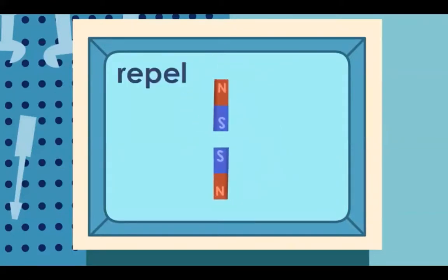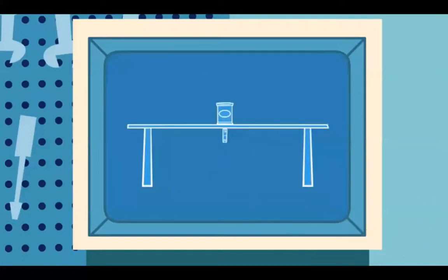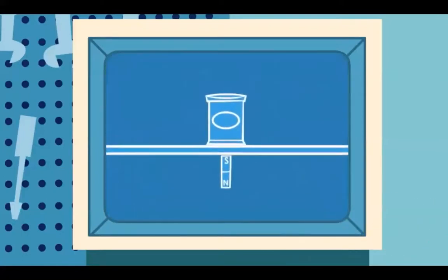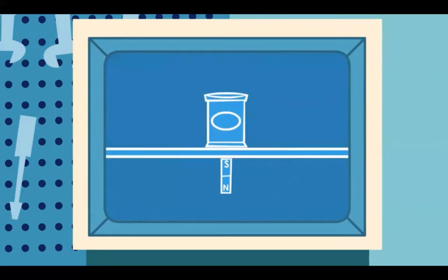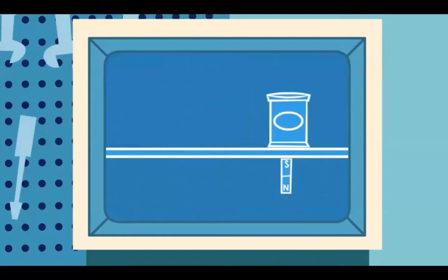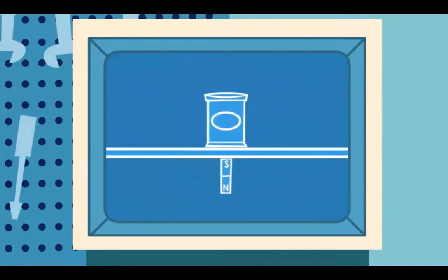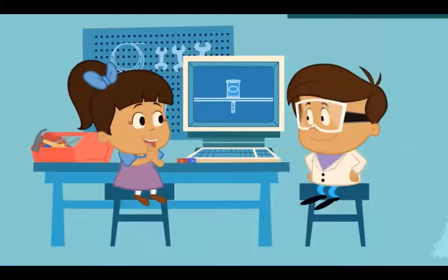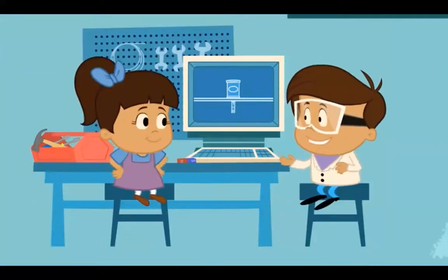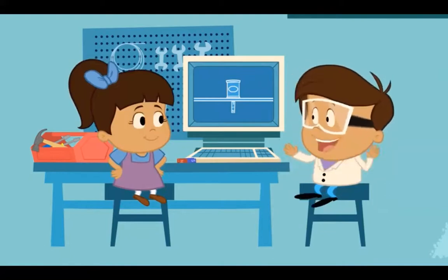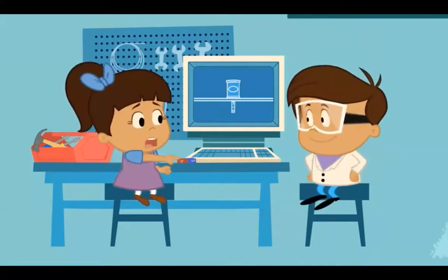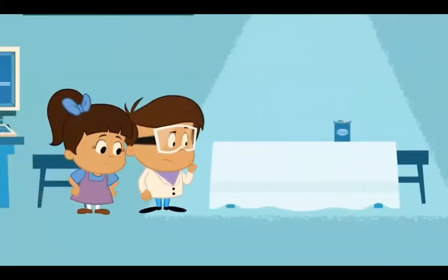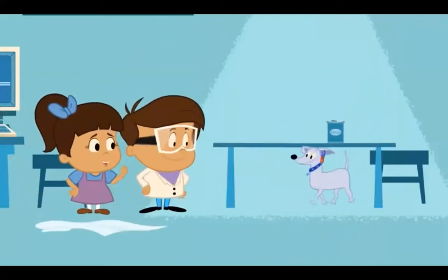So how did you do the soup can trick? That's what's so cool about magnets — they can pull or push objects without even touching them. The magnet I was using was strong enough to attract the soup can through the thin tabletop. When I moved the magnet under the table, it moved the soup can on top of the table. So you see, Izzy, it wasn't magic at all — it was magnets.